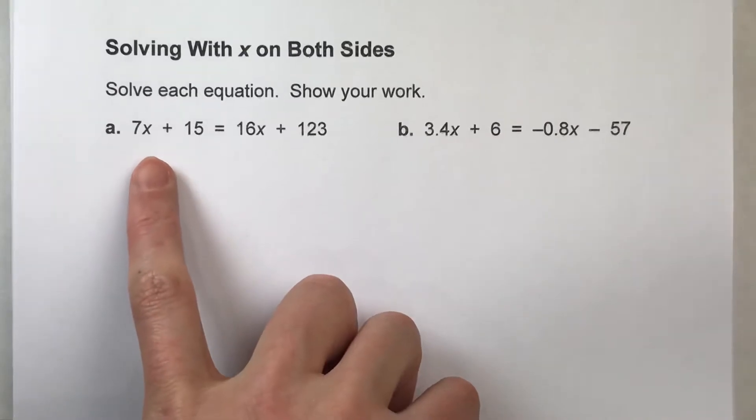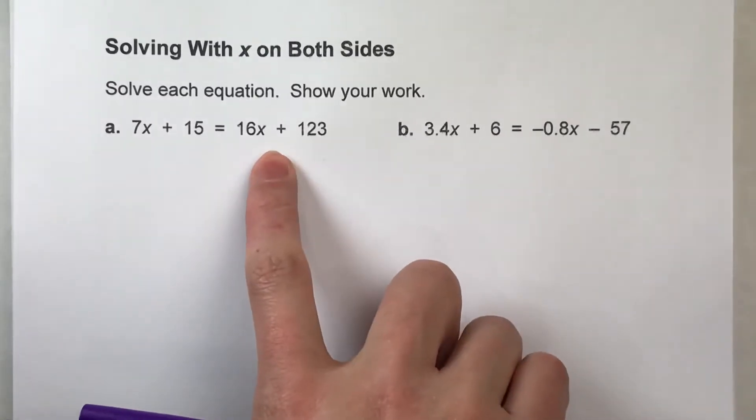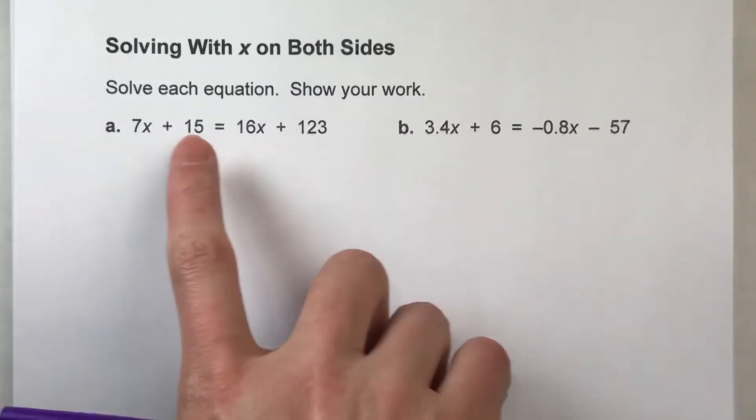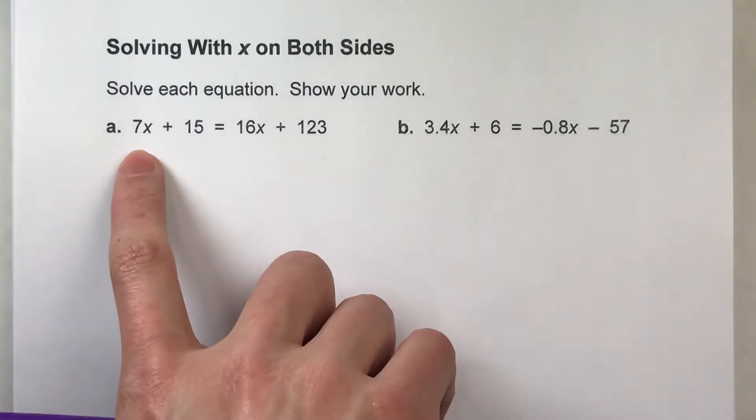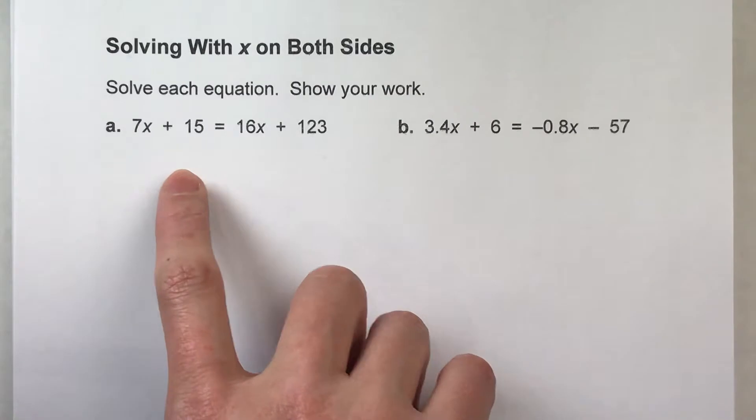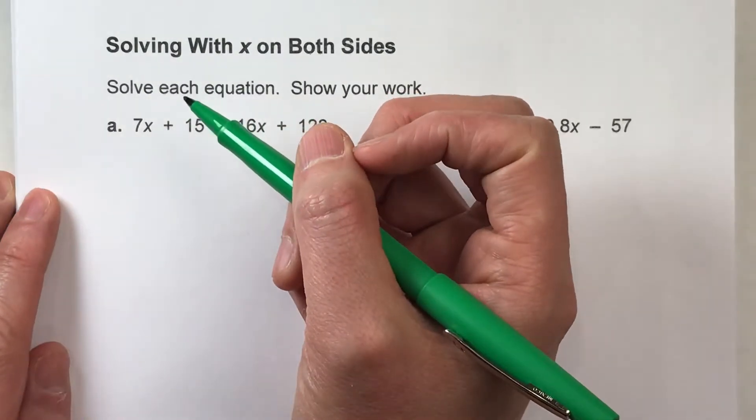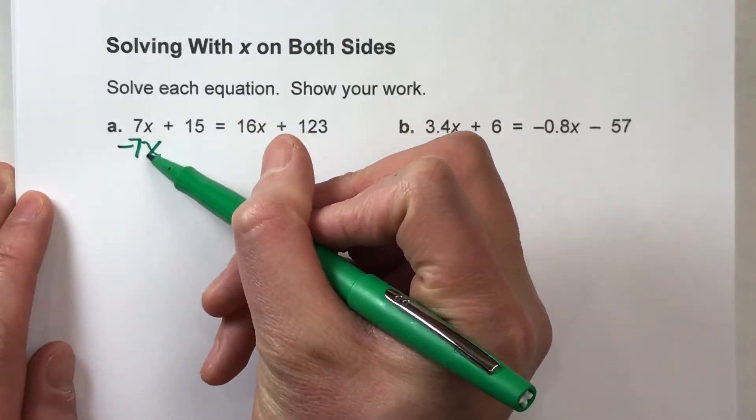So my first step would be to subtract off all the x's off one side of the equal sign, and you have a choice. You could subtract off 16x on both sides, but I always choose to subtract off the lesser amount of x's so I don't end up with a negative amount of x's. Technically, you can go either way and you'll still get the same answer, but I find this way is easier because I don't have to deal with many negatives, so I'm going to subtract off 7x off this side.